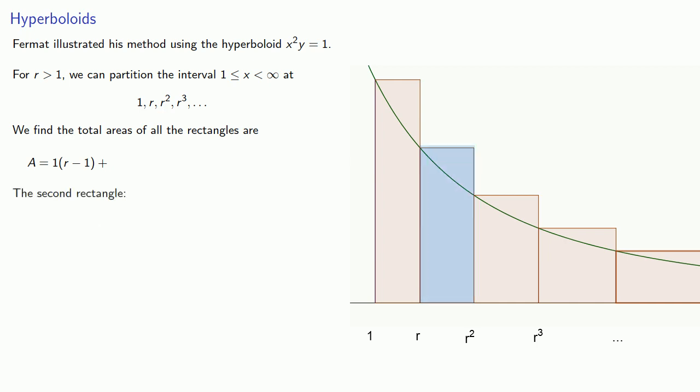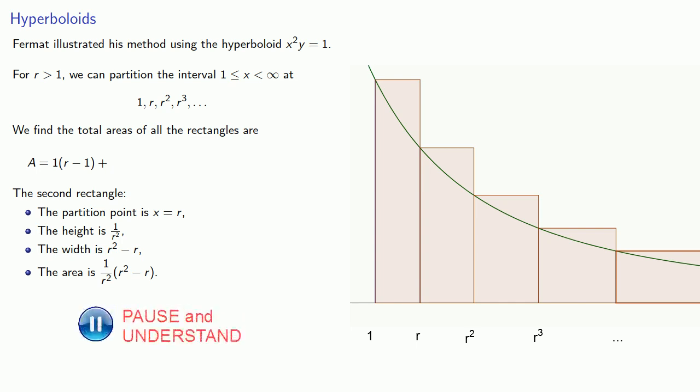How about the second rectangle? So for the second rectangle, our partition point is at x equals r, and the height is 1 over r squared. The width is r squared minus r, and so the area is 1 over r squared times r squared minus r. But we can do a little algebraic simplification and get the area of the second rectangle.